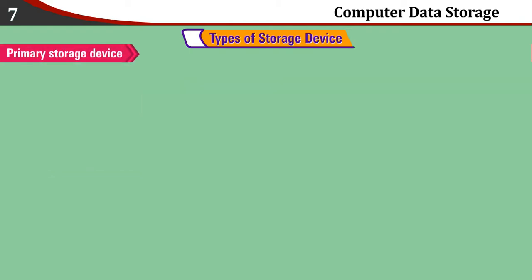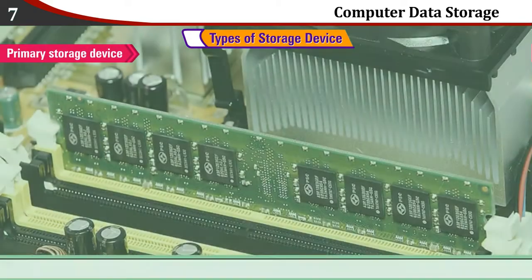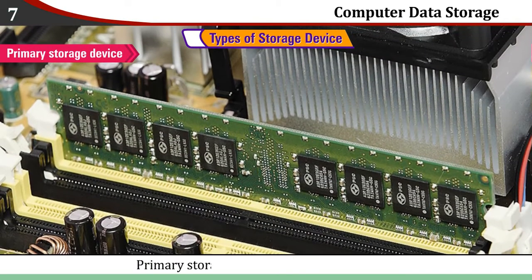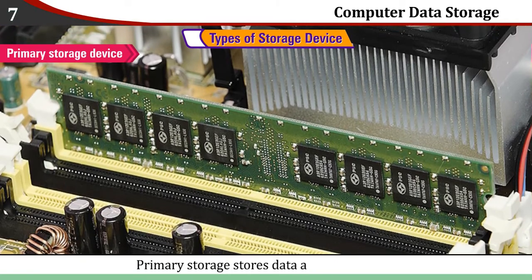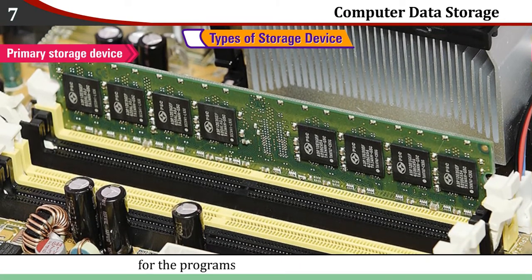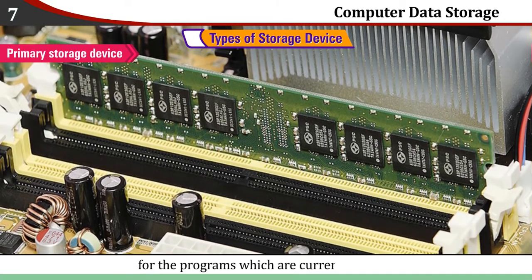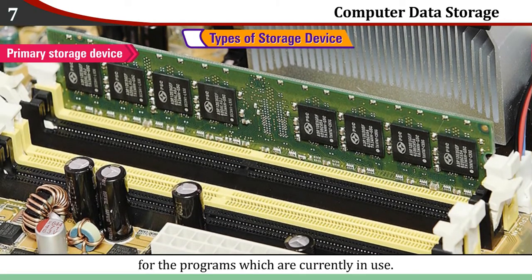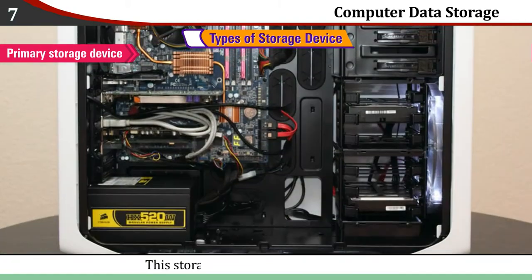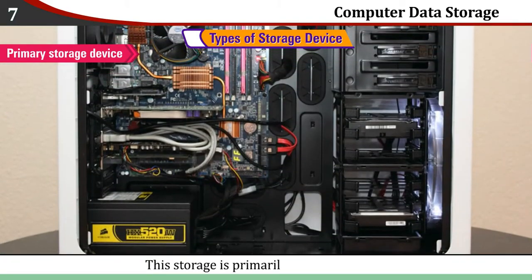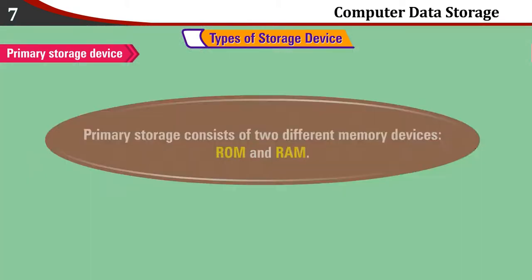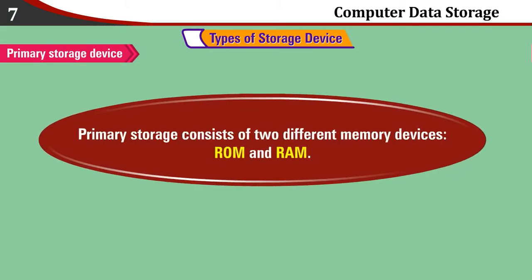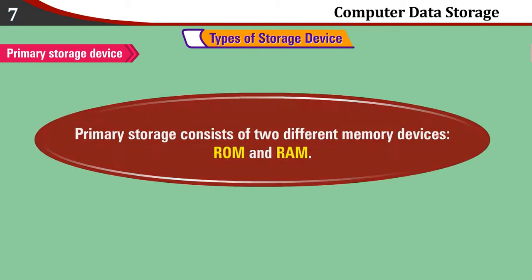Primary Storage Device: Primary storage stores data and instructions for the programs which are currently in use. This storage is primarily used by the CPU. Primary storage consists of two different memory devices: ROM and RAM.